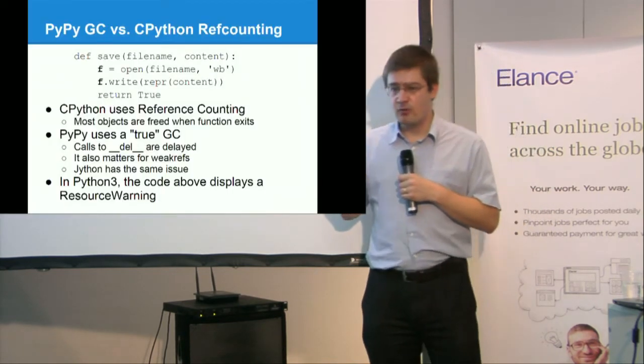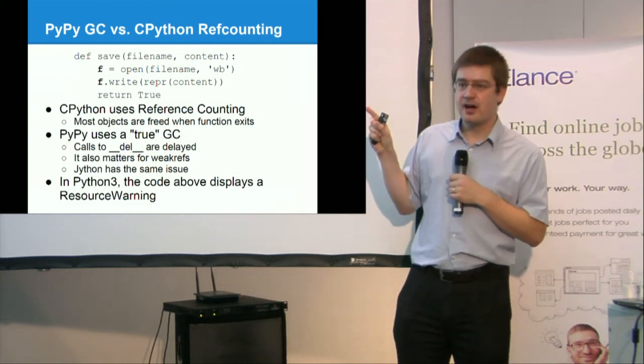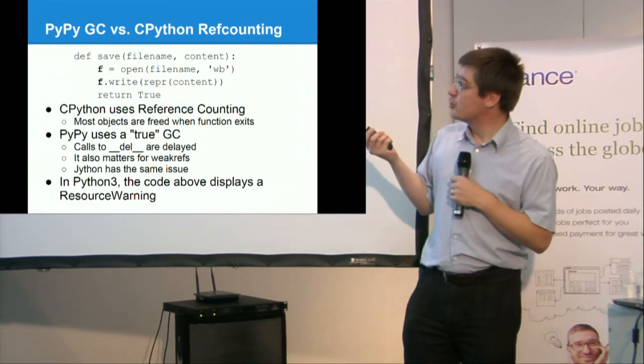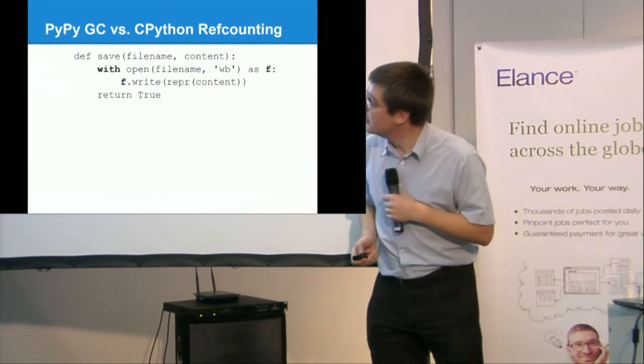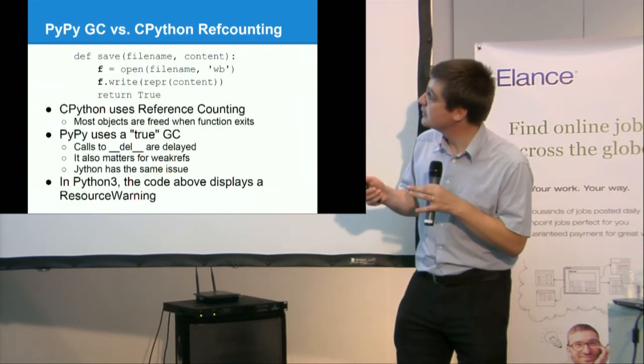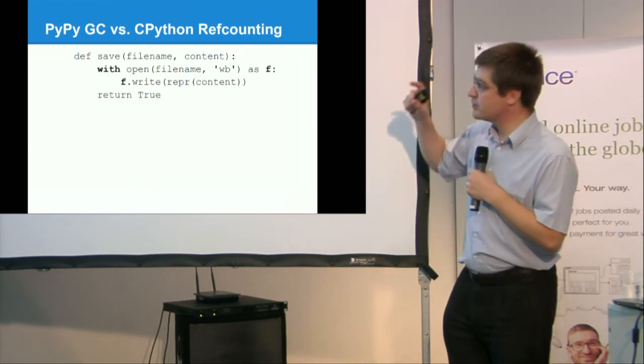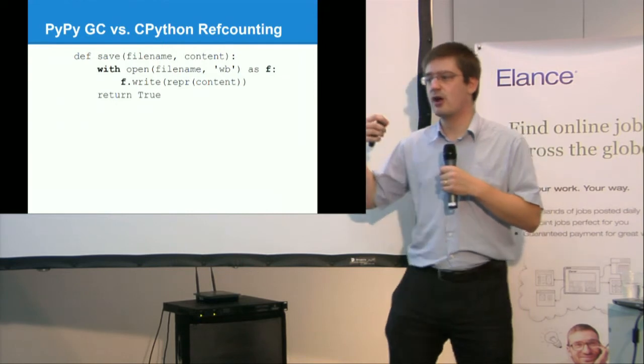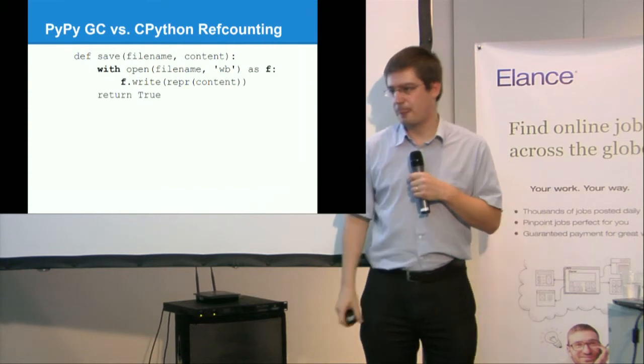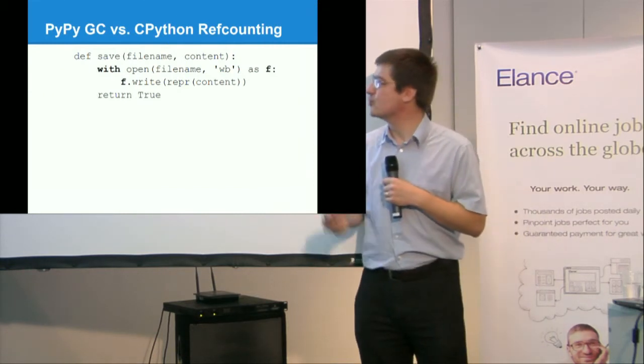So calls to DEL are delayed, because the DEL, just like in Java finalized, is called when the garbage collection actually runs. And Jiton has the same issue. And it is the same for weak references, of course. Now, it's a bit better with Python 3, because even with CPython 3, this code will raise a warning when you run it, saying that this file was closed by destruction. You should close it explicitly. So the good code for that is simply to use the with statement. It's almost the same amount of code. But the with statement will ensure that the file is properly closed as soon as we exit the with block. And this will work with PyPy as well. Of course, the closed method is called.